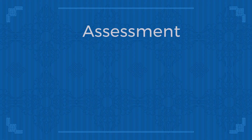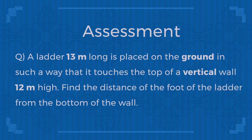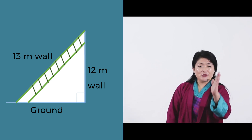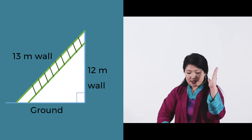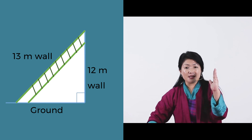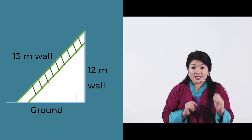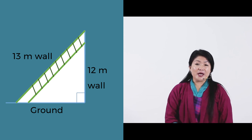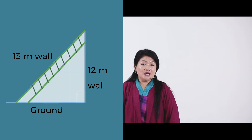We are coming to the end of this lesson. Here is a question for you to explore: A ladder 13 meters long is placed on the ground so that it touches the top of a vertical wall which is 12 meters high. Find the distance from the bottom of the wall to the bottom of the ladder. You can use the Pythagorean Theorem to find the answer easily. Thank you, and I hope you enjoyed the lesson.